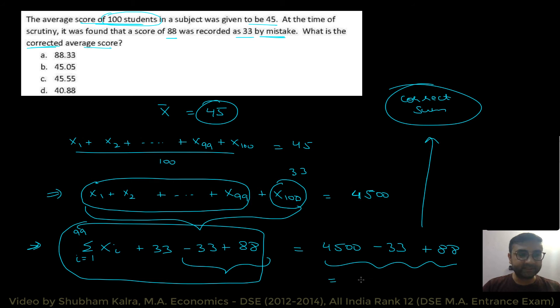So, that means, yehaan pe I can write summation xi where i is going from 1 to 99, plus 33, yeh hai equal to 4500. Ab correction ke liye, hum 33 ko subtract karengé, aur add kar dhenge 88 ko. And yehaan se bhi 33 ko subtract karengé, and add kar dhenge 88 ko. Toh, ab yeh jho sum hai, jo bhi tumhye right hand side pe mil ega, yeh hai tumhahara correct sum. Okay. So, jab tum isko solve karo ge, toh, correct sum a jae ga 4555. And because hum work kar rahe hai 100 students ke saath, so, agar humara sum hai 4555, toh, jho average score ho ga corrected, woh ho jae ga 4555 divided by 100. That is 45.55. So, option number C is the right answer. Okay. Let's move to the next question.